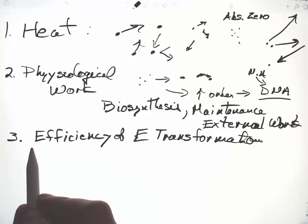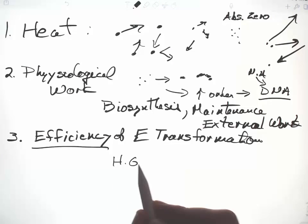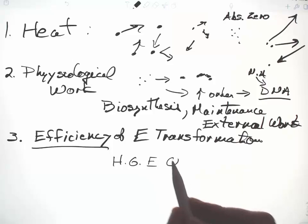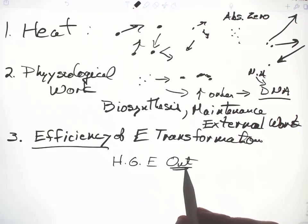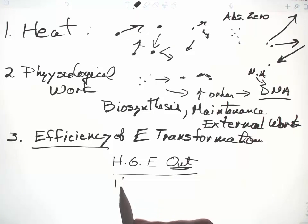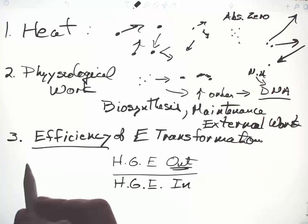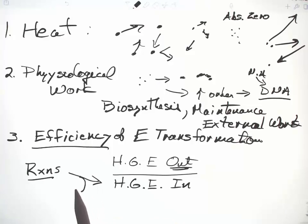So the way we calculate efficiency is by looking at what was the high-grade energy out, so what did we get back in terms of work or a more complex molecule, divided by what it costs us, the high-grade energy in. We always lose some as heat. The efficiency is always less than 100%. The range can be 10%, 20% in the 90s.